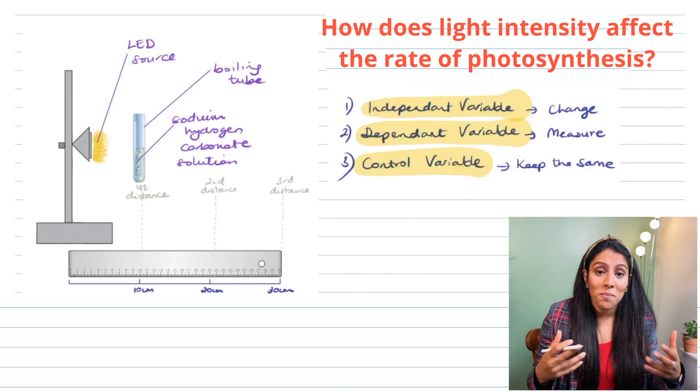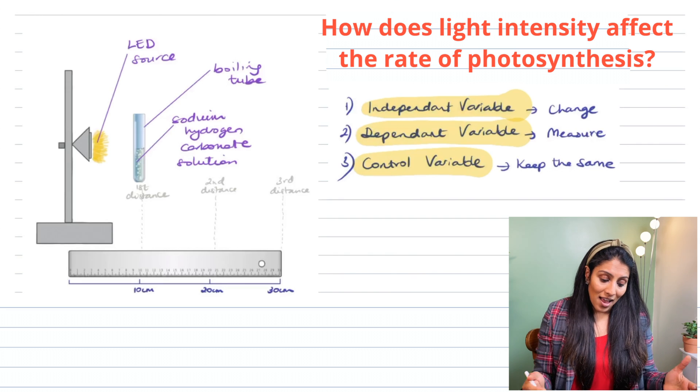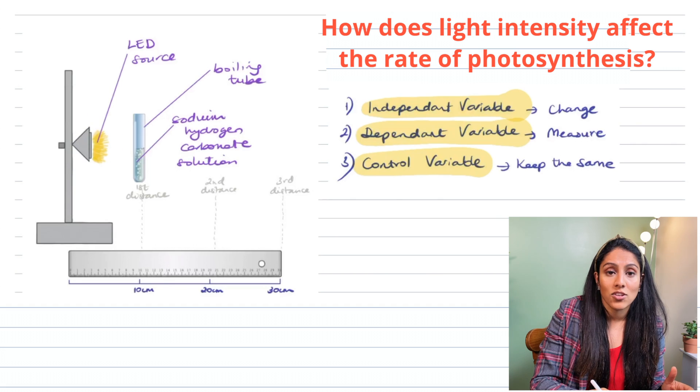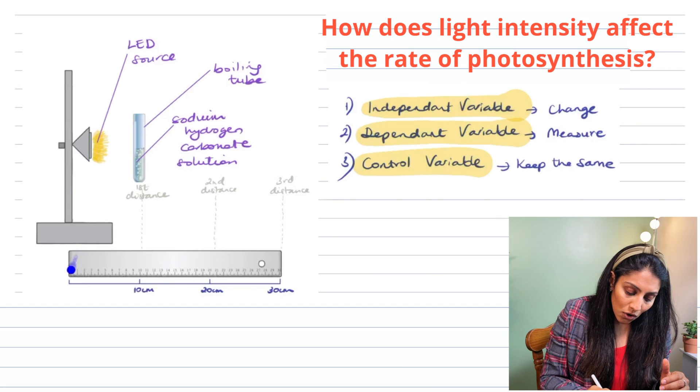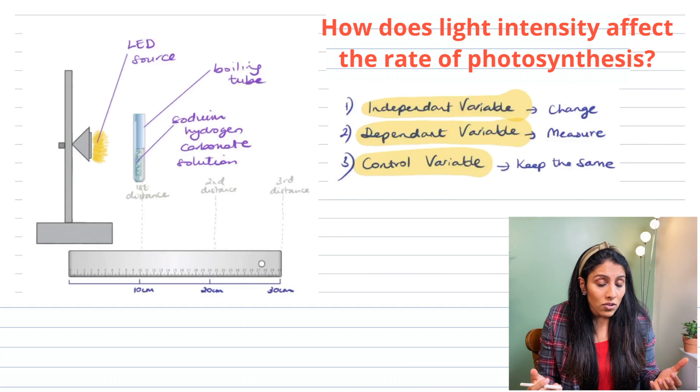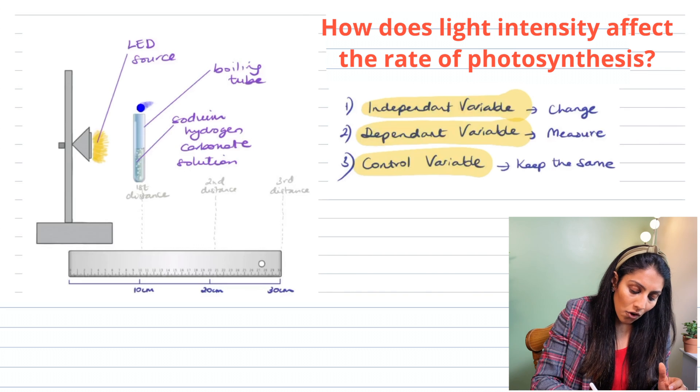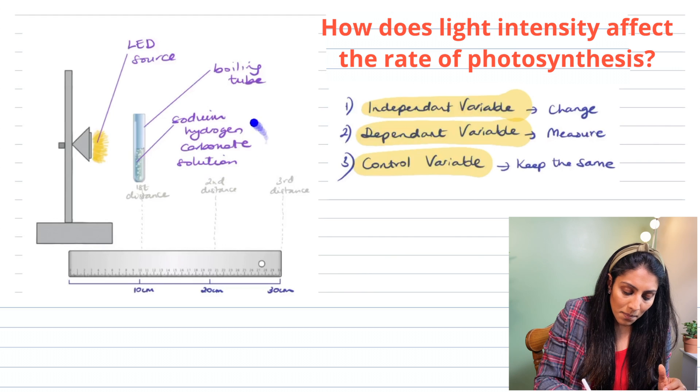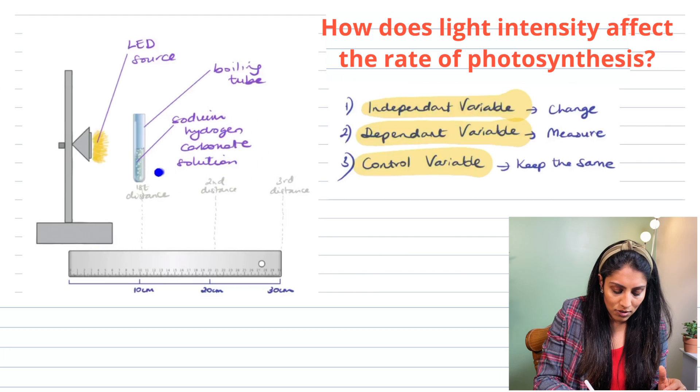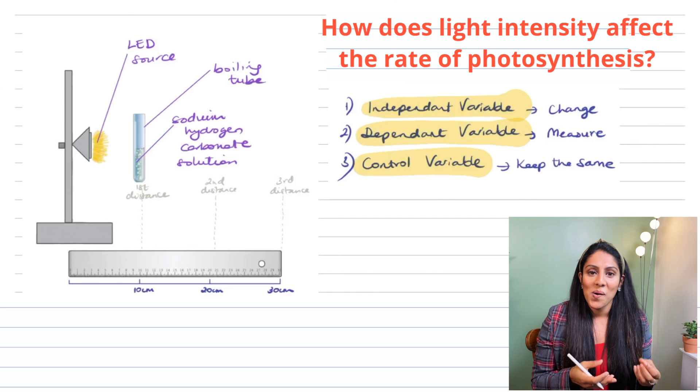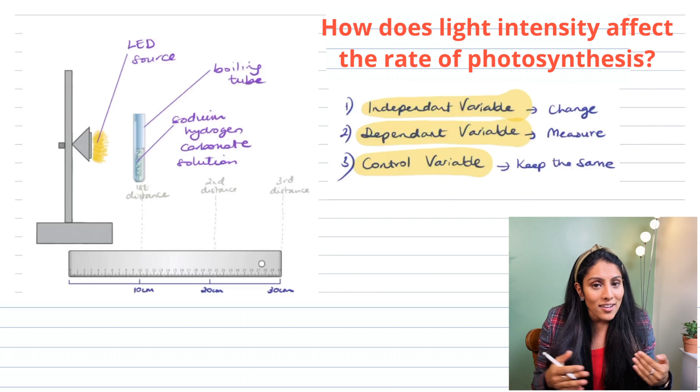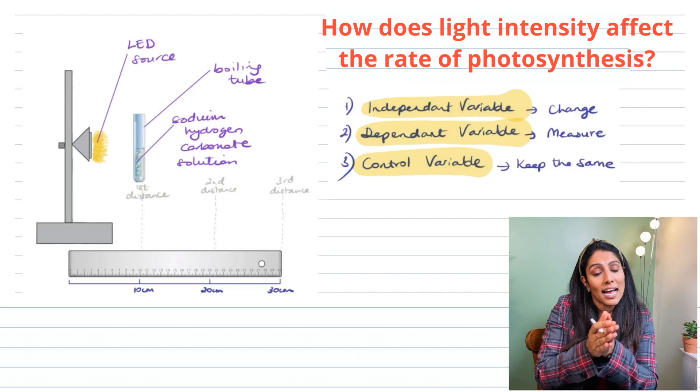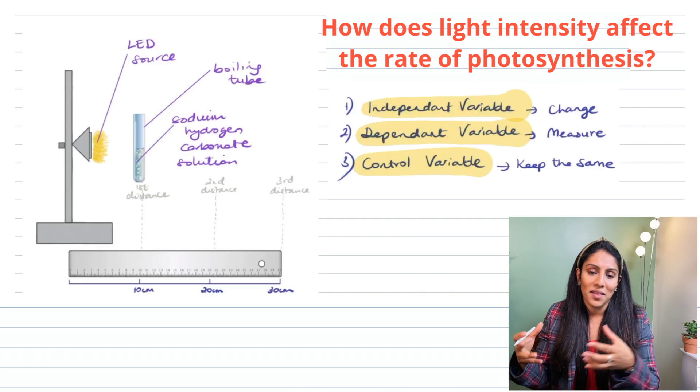So I've drawn a picture here and you might recognise doing this in one of your lessons. You have a stand here with a clamp that's attached to an LED light. You've got a ruler here and that's usually a one metre ruler. You've got a boiling tube over here and you have sodium hydrogen carbonate solution in there. So in this experiment we're going to look at how light intensity affects the rate of photosynthesis and we're going to do this by moving the boiling tube at different distances away from the light.